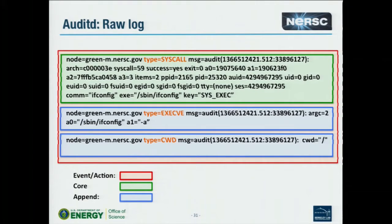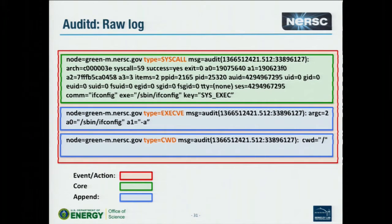This is what the raw logs look like — just executing something. You look at it and you're like, ugh. The main red box is the big action — someone did something, giving three lines. The green one is core, defining the thing. The blue ones are the append lines — more information about the thing.